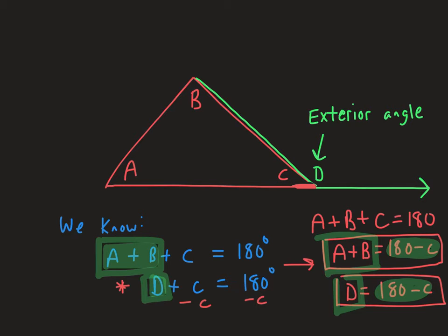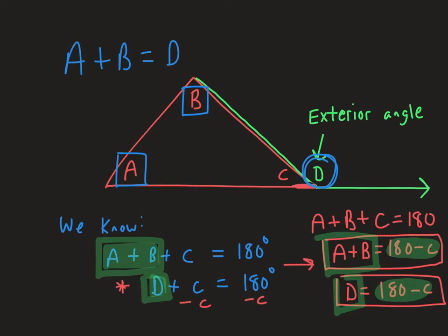There's a property — the Exterior Angle Theorem — that states whenever you have an exterior angle, it will always equal the sum of the two remote interior angles. These are called remote interior angles — not the adjacent one, but the other two angles in the triangle. Their sum A plus B will always equal the exterior angle D. It works because both can be shown to add up to 180 when combined with angle C.